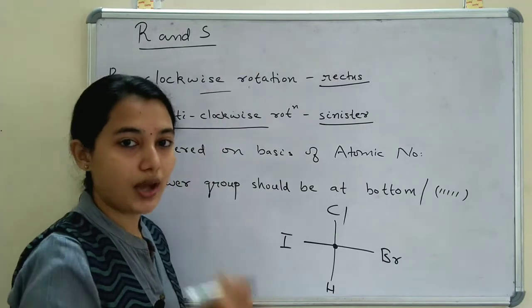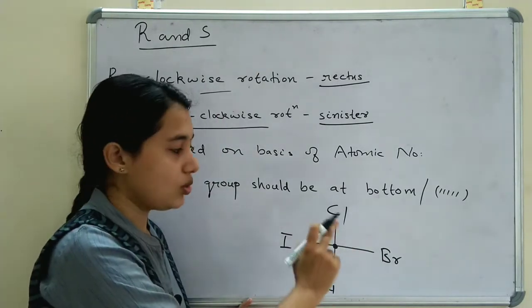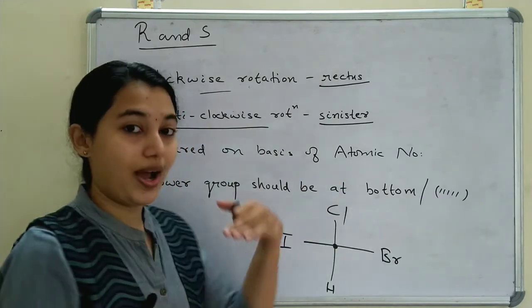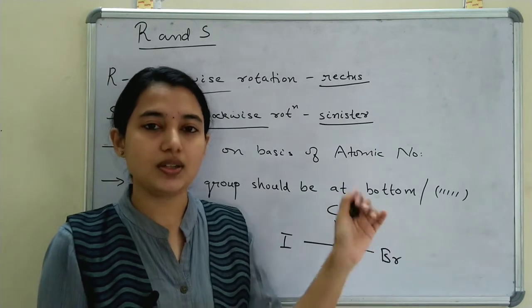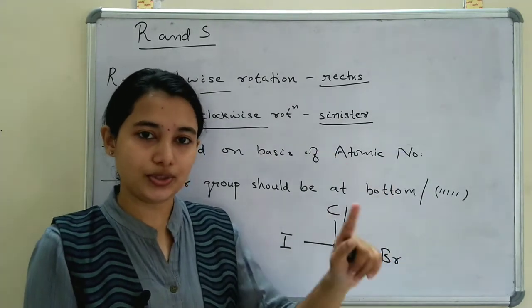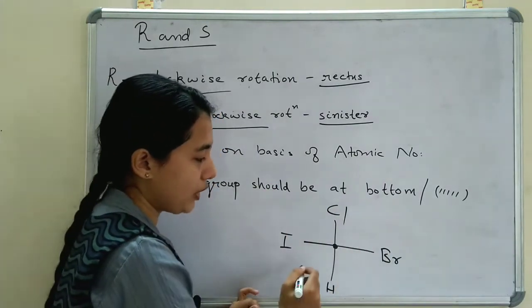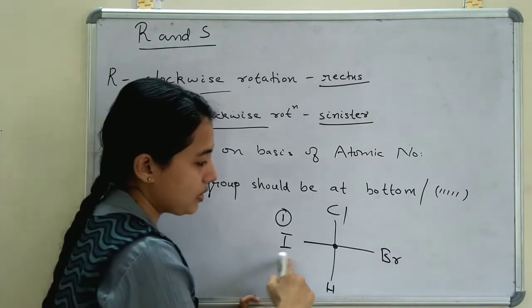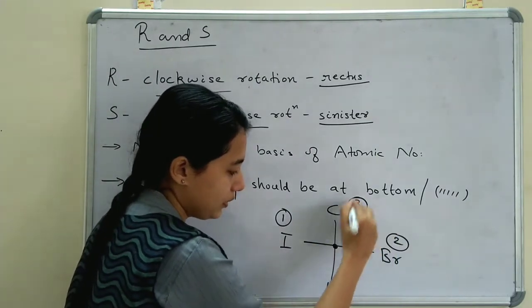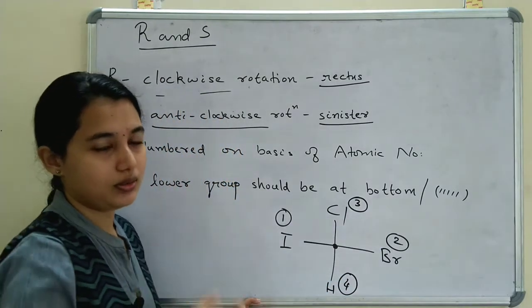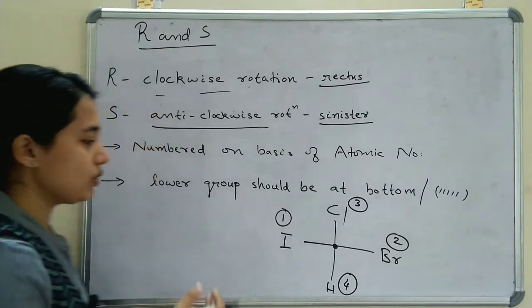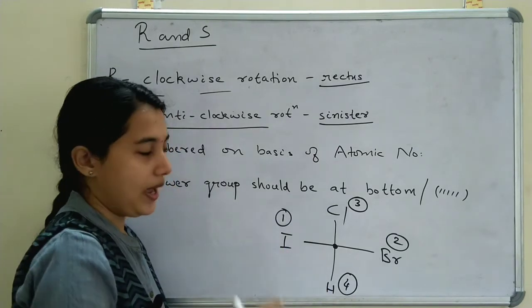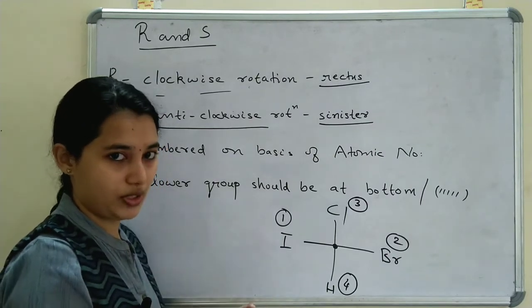First, we give numbers to the substituents based on atomic number. Higher atomic number gets priority number 1, then 2, then 3, and so on. Iodine has the highest atomic number, so it gets 1; then bromine gets 2, chlorine gets 3, and hydrogen gets 4. The lowest priority group (usually hydrogen) should be at the bottom position. If it is not at the bottom, we must reverse the configuration.